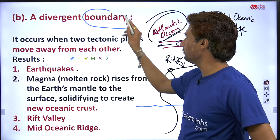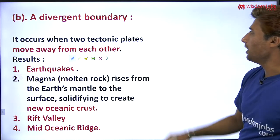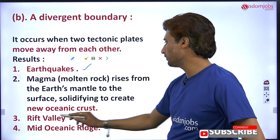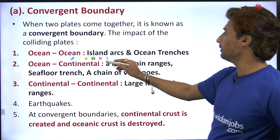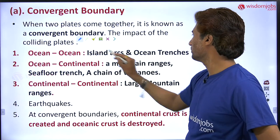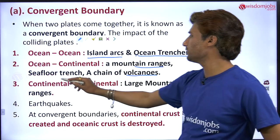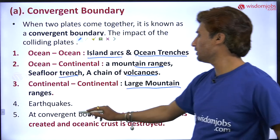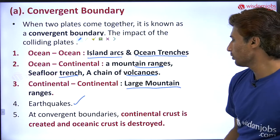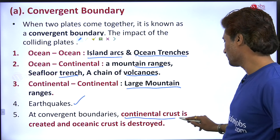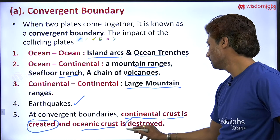At a divergent boundary we find: earthquake, new oceanic crust, rift valley, and mid-oceanic ridge. At a convergent boundary it was: ocean trenches, island arcs, mountain ranges, volcanic mountain ranges, and trenches; large mountain ranges; earthquake. Earthquake occurs at both convergent and divergent boundaries. Continental crust is created and oceanic crust is destroyed at a convergent boundary.